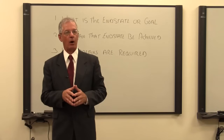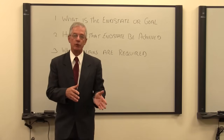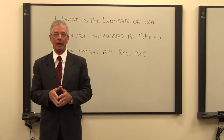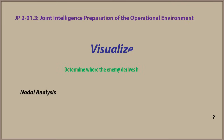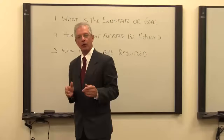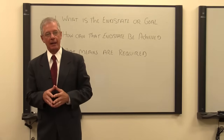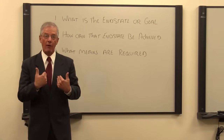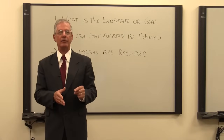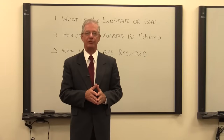JP50 doesn't say how to identify a center of gravity. In fact, it refers you to JP2-01.3, which is the Joint Intelligence Preparation in the Operational Environment, which basically says: use a systems perspective and do a nodal analysis to determine where the enemy derives his strength. The technique it recommends is, quote, to visualize. That's it — visualize. So how do you visualize and analyze a system? Joint doctrine is silent on this subject, leaving it up to you. So I'll offer you a method to visualize and analyze a system to determine its center of gravity.